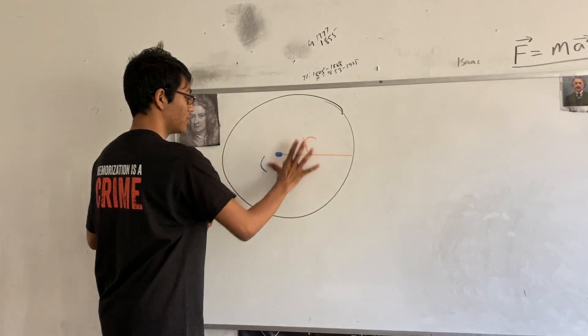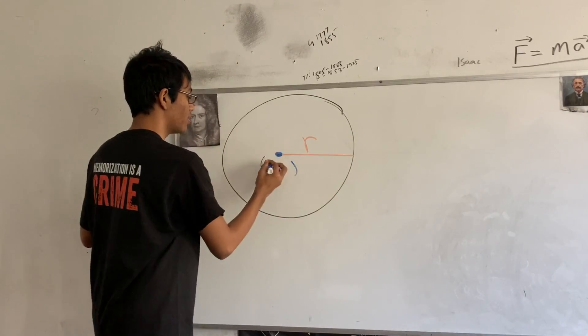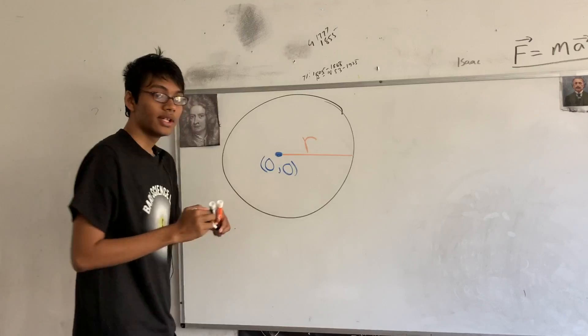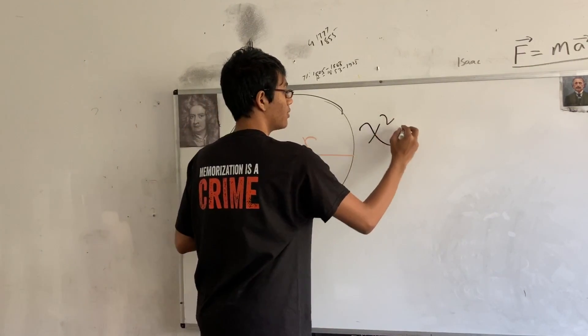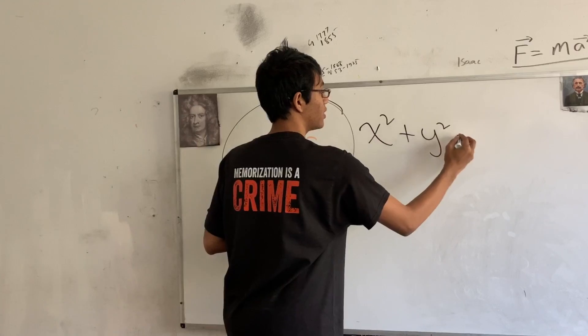If you have a circle at the origin, which is 0, 0, the equation of your circle is going to be pretty simple. It's just going to be x squared plus y squared equals r squared.